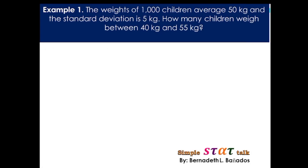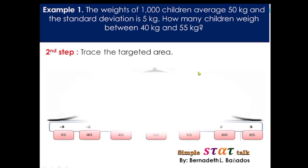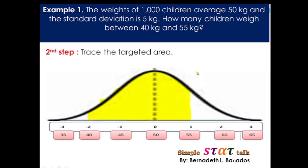Next is, we are going to trace the target area. We were asked to find the number of children who weigh between 40 kg and 55 kg. So, 40, by just looking directly at the graph, 40 is under negative 2. And then, 55 is under positive 1. So our target area, or the area that we are going to solve, is between negative 2 and positive 1.